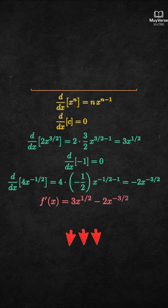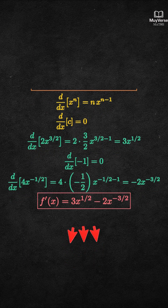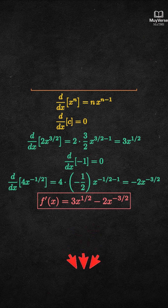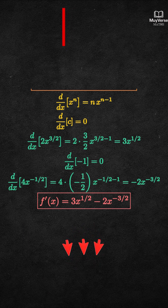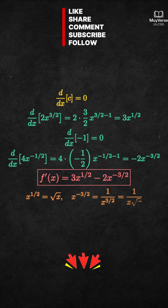Step 3: Rewrite using radicals if desired. x to the 1 half is square root of x, and x to the negative 3 halves is 1 over x to the 3 halves, which equals 1 over x times square root of x. So f prime of x equals 3 times square root of x minus 2 over x to the 3 halves.